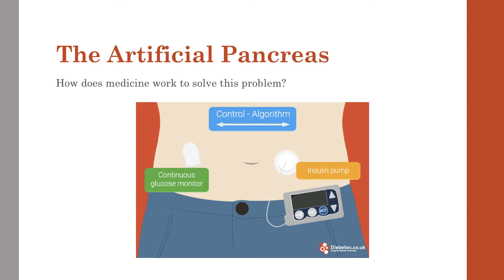So what is the answer in medicine for this problem? Just recently approved by the FDA in America is the artificial pancreas. We have this insulin pump, which is controlled by a glucose monitor. This continuous glucose monitor regulates the amount of sugar in a patient's blood and sends information to the insulin pump.